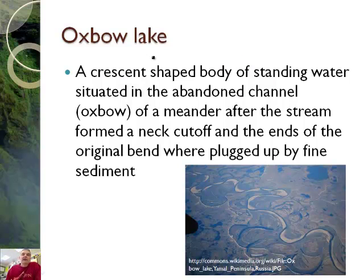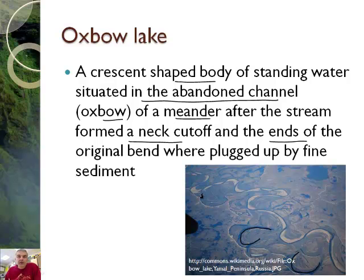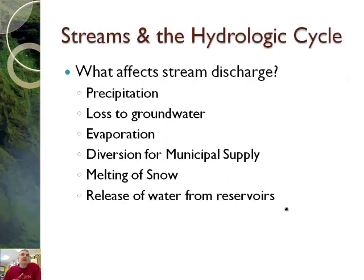This is then called an oxbow lake. What's an oxbow lake? That's the C-shaped lake we're talking about — a crescent-shaped body of standing water situated in the abandoned channel of a meander, after the stream formed a neck cut-off and the ends of the original bend were plugged up by fine sediment. Here — somewhere in Russia — we can see an oxbow lake here, another one here, and another one here. There are quite a few of these oxbow lakes, and we can see one that's about to happen right here too.